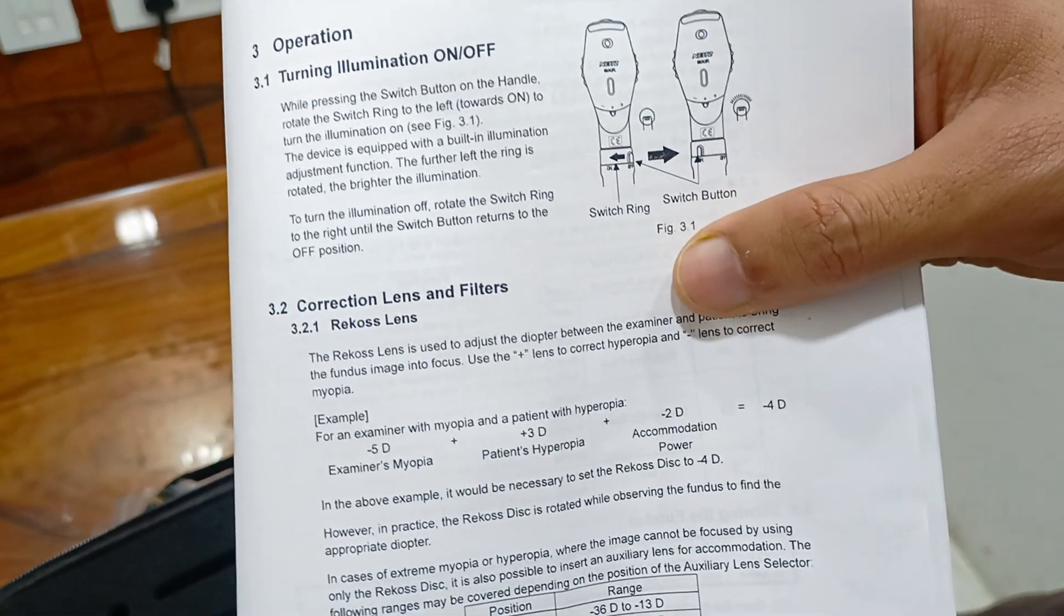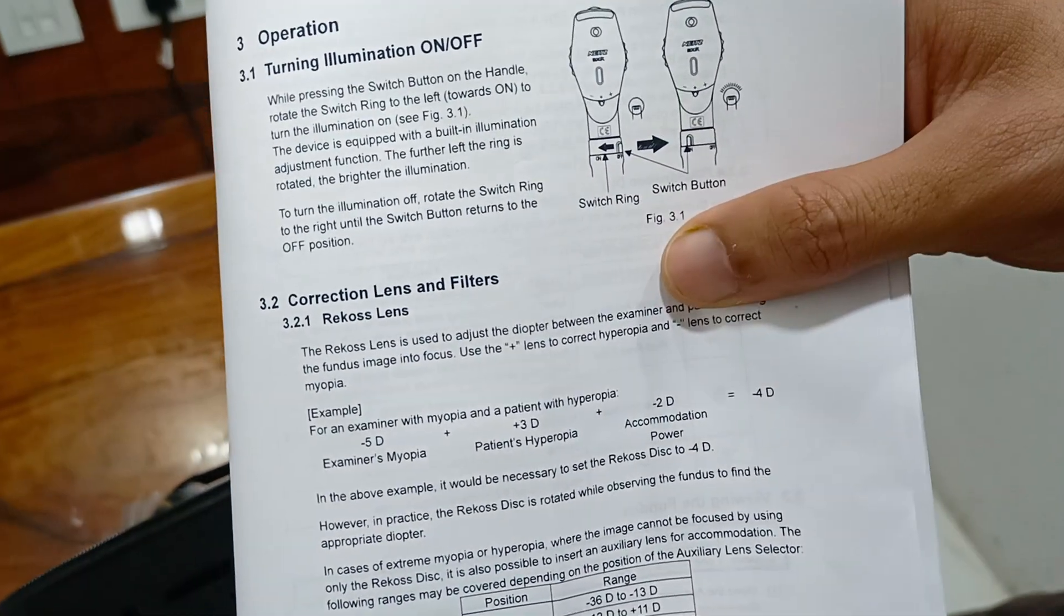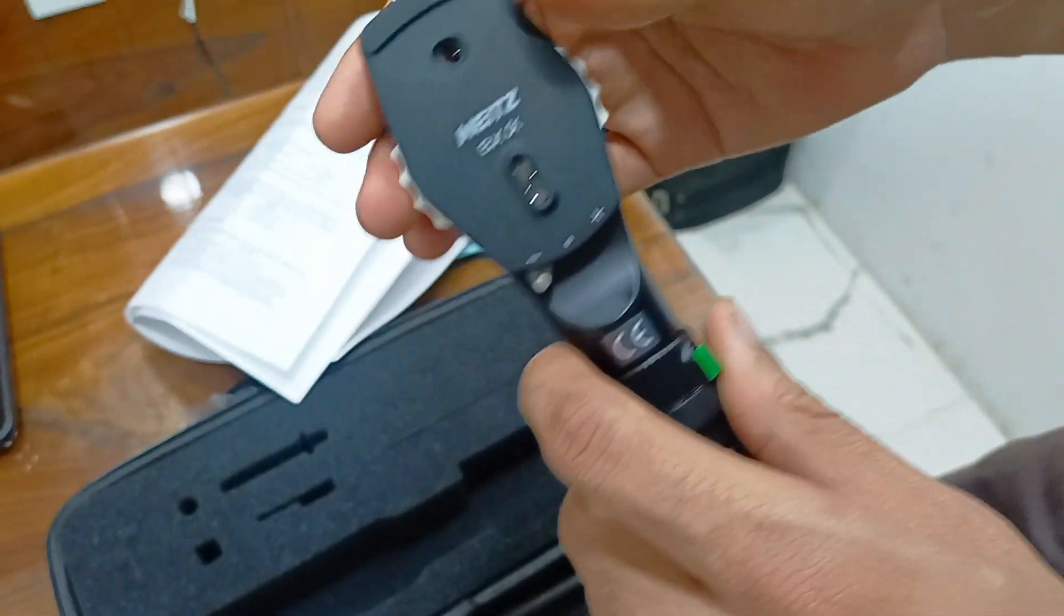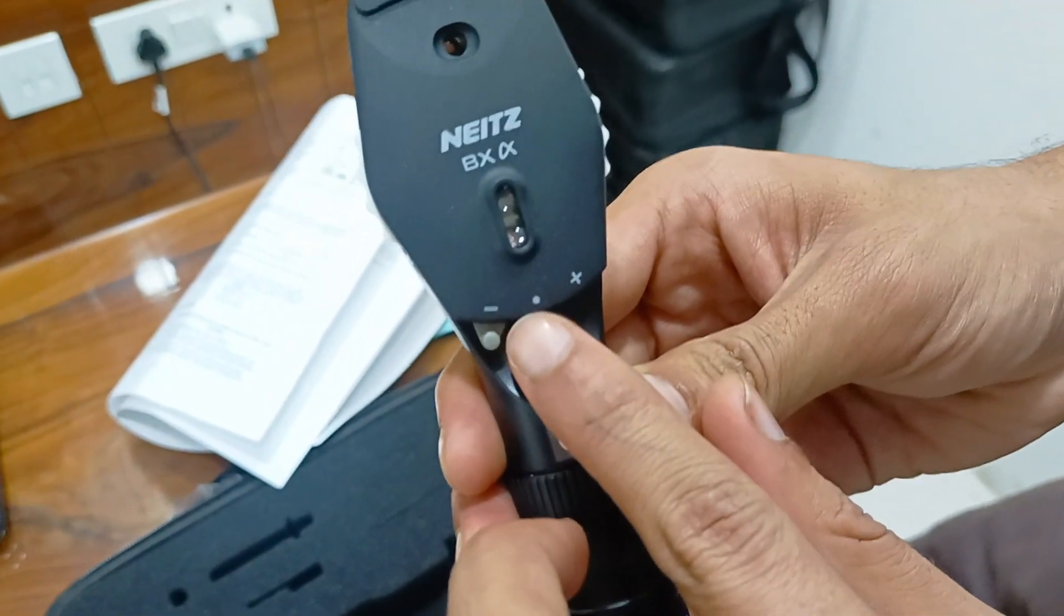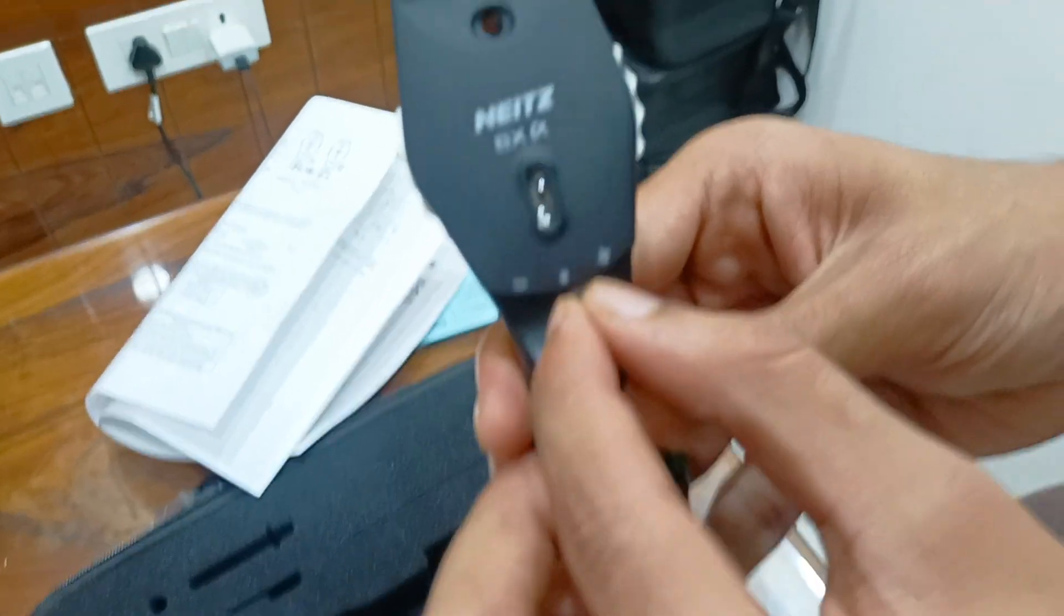And minus 12 diopter to plus 11 diopter, and plus 12 diopter to plus 35 diopter. You can change diopter position by minus, plus, or both.